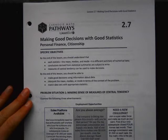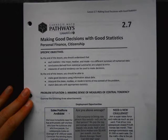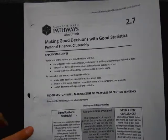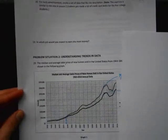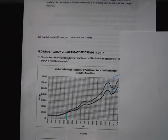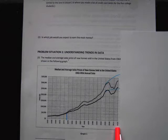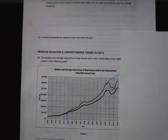This section continues about mean and median, but it's two problem situations, and we're not going to do the first one. We're going to play with problem situation two that says 'understanding trends in data.' We actually looked at this earlier in your packet — it's talking about prices of homes between 1963 and 2014, and something really unusual happened with the mean and the median.